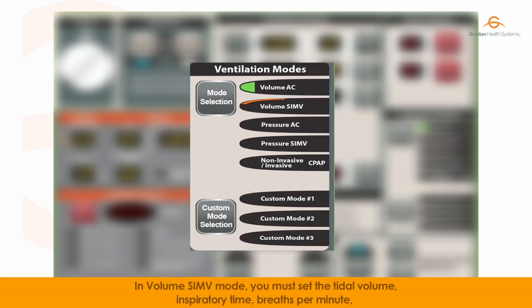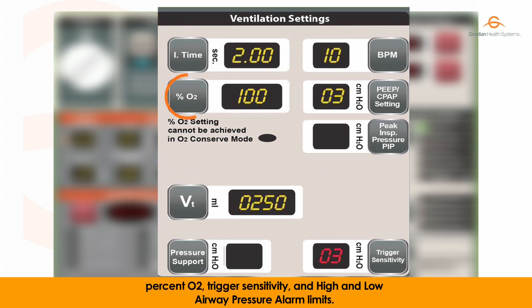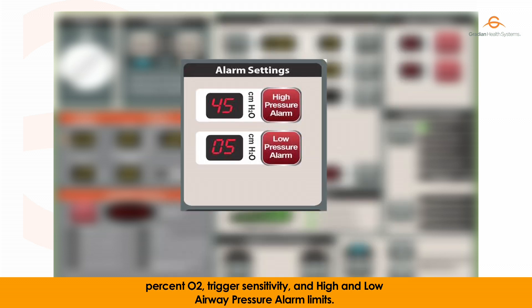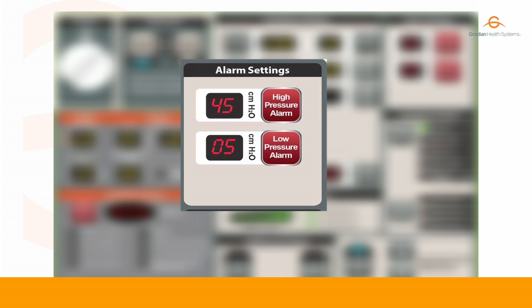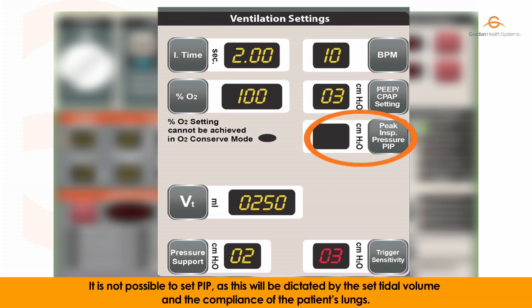In volume SIMV mode, you must set the tidal volume, inspiratory time, breaths per minute, FiO2, trigger sensitivity, and high and low airway pressure alarm limits. If needed, PEEP or pressure support settings can be added. It is not possible to set peak inspiratory pressure, as this will be dictated by the set tidal volume and the compliance of the patient's lungs.